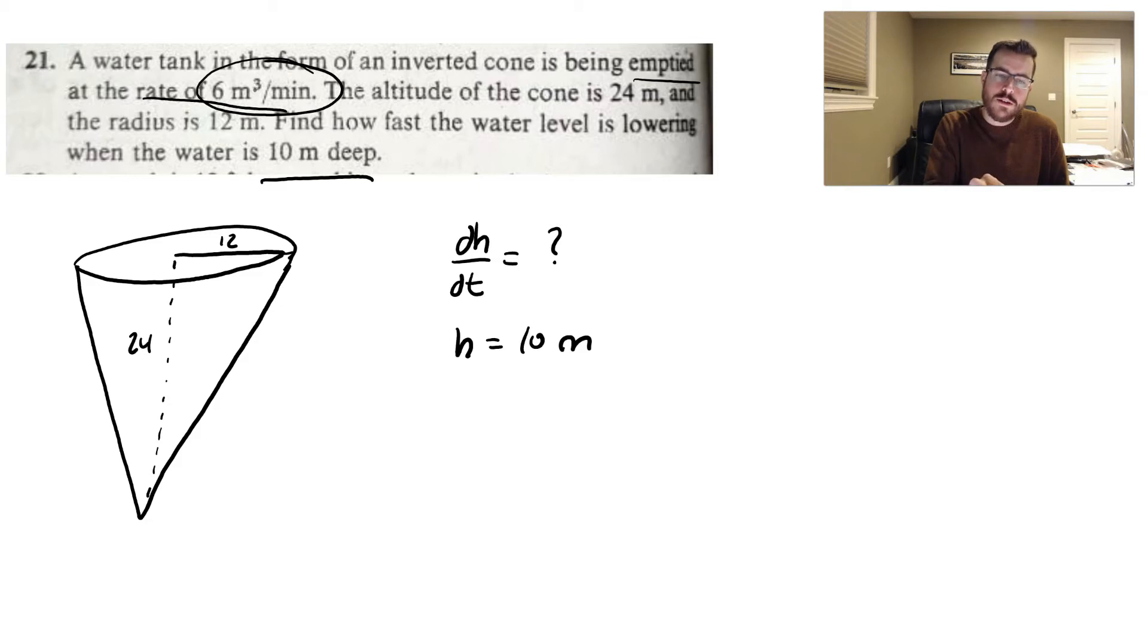And since it's meters cubed per minute, that's the change in volume over the change in time. So I know if it's being emptied, we're losing six meters cubed per minute. dV/dt = -6 m³/min.